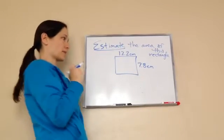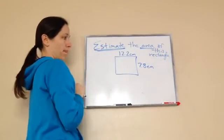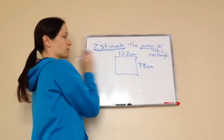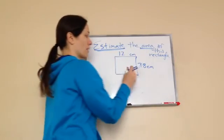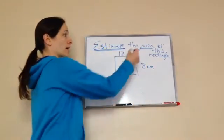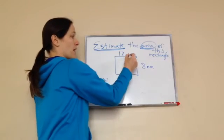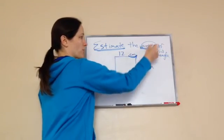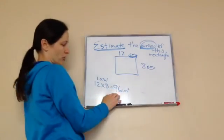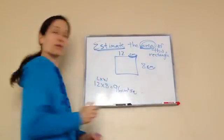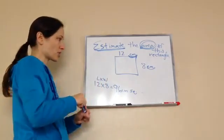So let's estimate. 12.2 would become 12, and 7.8 would become 8. Area means length times width, so we're going to do 12 times 8, which is 96. Remember, you also have measurements when measuring area — so it would be 96 centimeters squared. You could also just write the superscript 2. As you get older, that's how they're going to want you to write it — with the two — because you're doing two measurements. That is lesson 104.